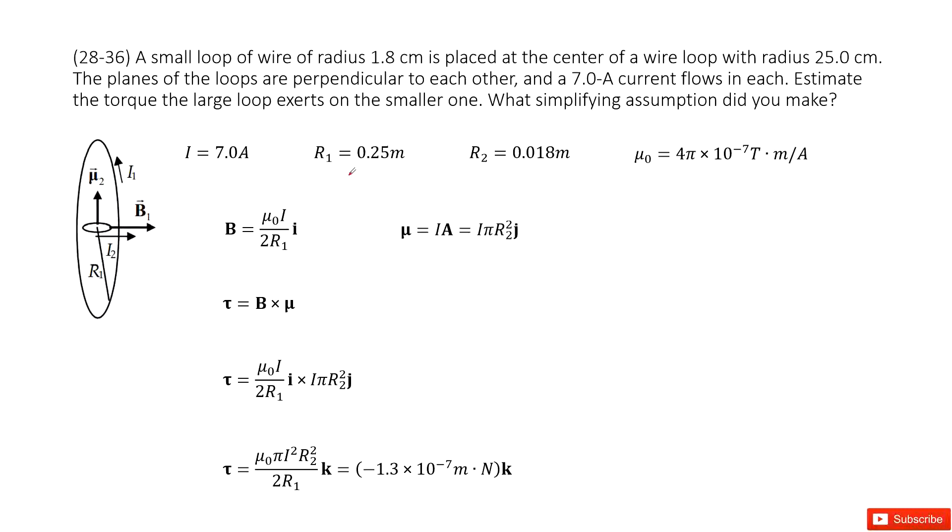So there you can see we need to find the torque of the larger loop acting on the smaller one. We can consider the magnetic field at the center is by this larger loop, and we can get the magnetic function in this way for the loop. You can check your textbook.